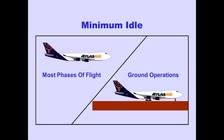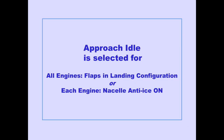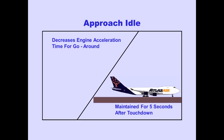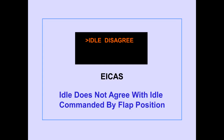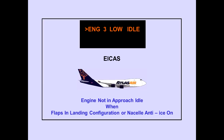The EEC automatically selects minimum idle during most phases of flight and ground operation. Approach idle is automatically selected for all engines when flaps are in the landing configuration, or for each engine when nacelle anti-ice is on. Approach idle decreases engine acceleration time for go-around and is maintained for 5 seconds after touchdown, at which time minimum idle is selected. The ICAS advisory message 'idle disagree' is displayed if the idle setting of one or more engines does not agree with the idle setting commanded by flap position. The ICAS advisory message 'engine low idle' is displayed if the engine is not in approach idle when the flaps are in the landing configuration or nacelle anti-ice is on in flight.